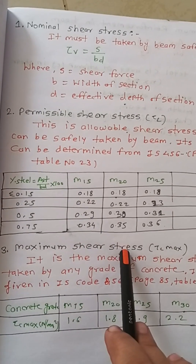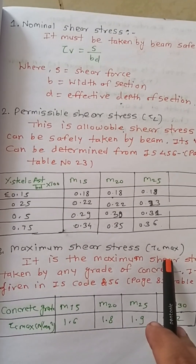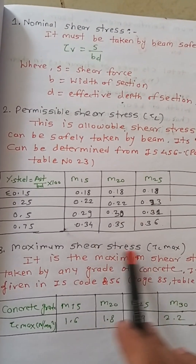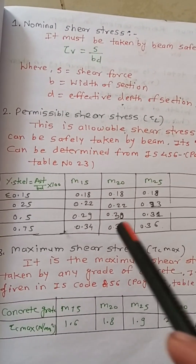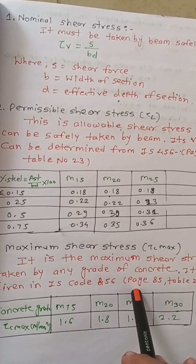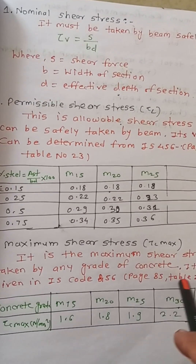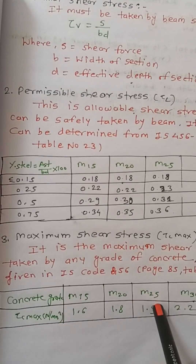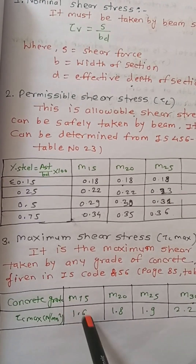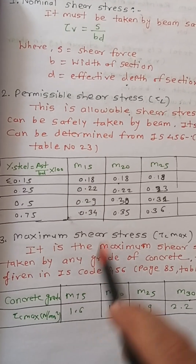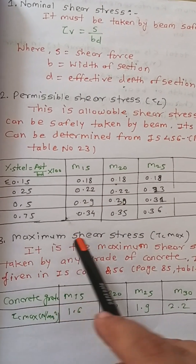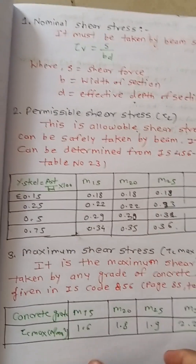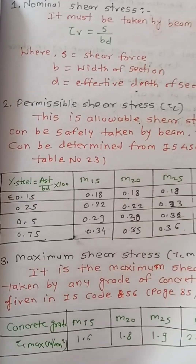The third terminology is maximum shear stress, denoted by τc max. It is the maximum shear stress taken by any grade of concrete, above which it is not permissible to go. Its values are given in IS 456, page 85, Table Number 24, where the grade of concrete and corresponding τc max values are listed directly.